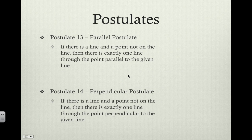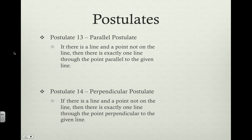Moving on, we've got a few postulates to learn about. The first one is the parallel postulate, and this states that if there is a line and a point not on that line, then there is exactly one line through that point that will be parallel to the given line.